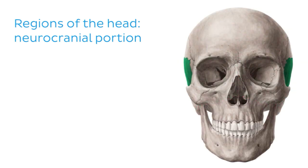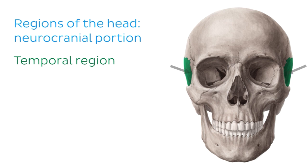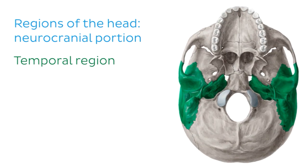Moving on, the temporal region of the head is also located on either side of the head but below the parietal region, as shown by the arrows. This region overlies the temporal bones of the skull, and viewing the skull from below we can see the temporal bones better and how they contribute to the zygomatic arches of the skull.